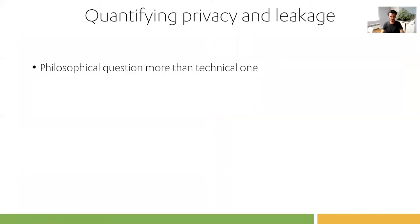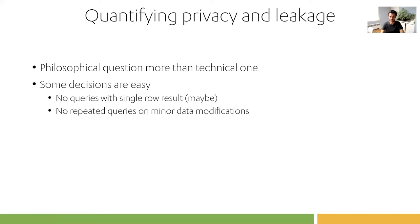What still keeps me awake? This is really more of a philosophical question than a technical one. MPC allows you to run a query, but it makes no guarantees that you can't infer from the result what the input data was — even though the data is supposed to be private. Some decisions are easy: we typically don't allow queries that reveal a single row result, and we don't allow repeated queries if the data slightly changes. If we have 100 participants and we've already run the computation, we don't allow a 101st straggler to join.